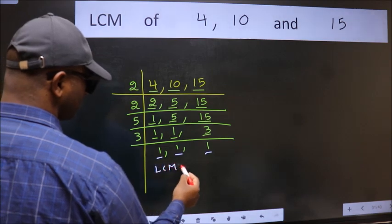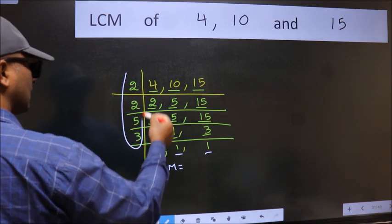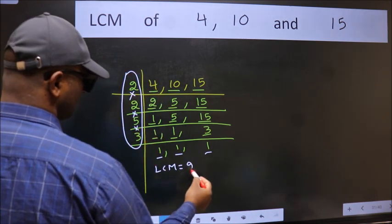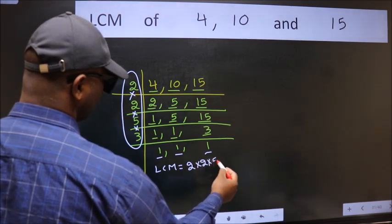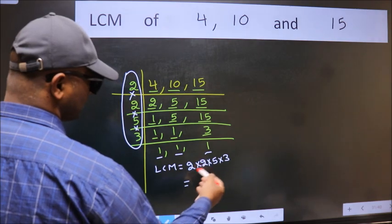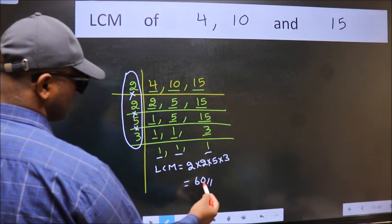So our LCM is the product of these numbers. That is 2 into 2 into 5 into 5 into 3. When we multiply these numbers, we get 60. This is our LCM.